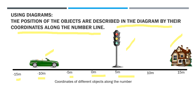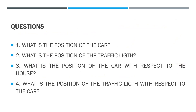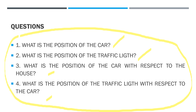Let's look at the objects. Question number 1: What is the position of the car? Refer back to the diagram. What is the position of the traffic light? What is the position of the car with respect to the house? What is the position of the traffic light with respect to the car? All four questions should be based on the diagram shown. Go back to it and base your answers there.